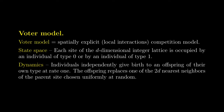In the voter model, each site of the integer lattice in d dimensions is occupied by exactly one individual. Those individuals can be of type 0 or of type 1. We are dealing with a competition model where two different types are going to compete for space. The process evolves by assuming that all individuals independently give birth to an offspring of their own type at rate 1. At birth, the offspring is sent to one of the 2D nearest neighbors of the parent site chosen uniformly at random, and this offspring is going to replace the individual at the target site.